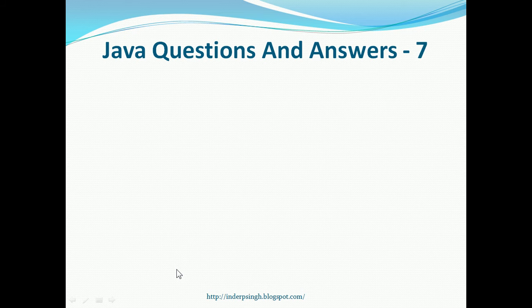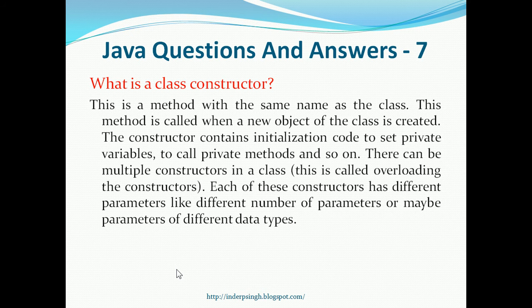Question 7. What is a class constructor? This is a method with the same name as the class. This method is called when a new object of the class is created. The constructor contains initialization code to set private variables, to call private methods, and so on. There can be multiple constructors in a class, and this is called overloading the constructors. Each of these constructors has different parameters like different number of parameters or maybe parameters of different data types.